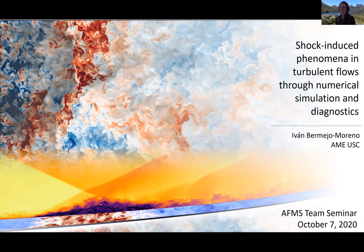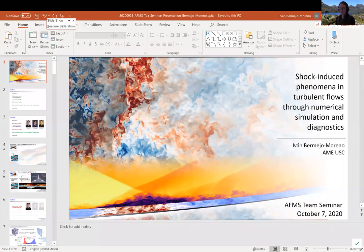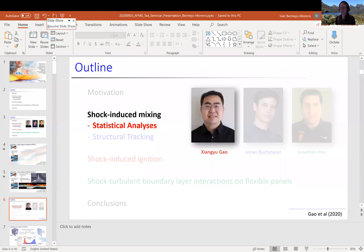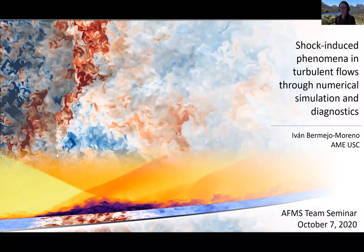Ivan received his PhD in Aeronautics from the California Institute of Technology in 2008. He spent time as a postdoctoral researcher at the Center for Turbulence Research at Stanford University. And since 2015, he's been at the Aerospace and Mechanical Engineering Department at the University of Southern California. Ivan's research focuses on turbulent flows involving multi-physics phenomena, and today he will be talking about shock-induced phenomena in turbulent flows.